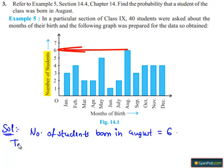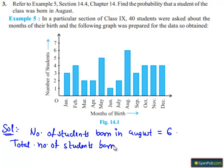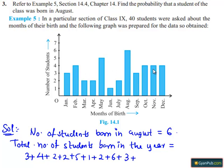Total number of students born in the year equals to 3 plus 4 plus 2 plus 2 plus 5 plus 1 plus 2 plus 6 plus 3 plus 4 plus 4 plus 4, which is 40.